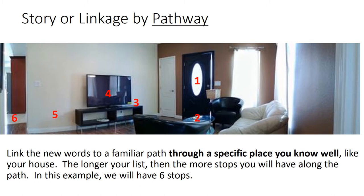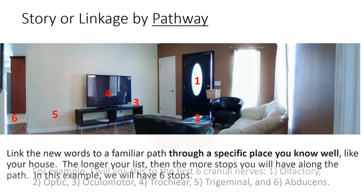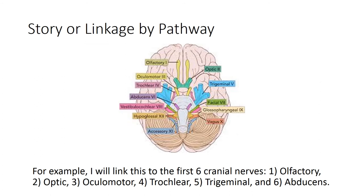In this example, we will have six stops, starting at the door and running through the living room. We will link this to the first six cranial nerves: one, olfactory; two, optic; three, ocular motor; four, trochlear; five, trigeminal; and six, abducens.